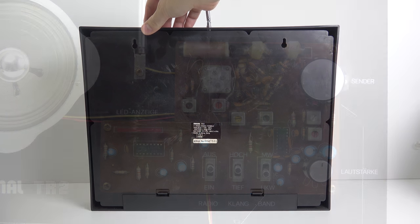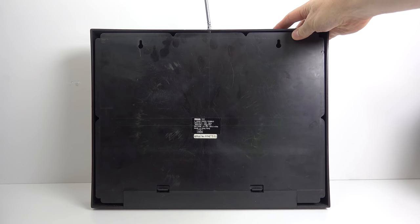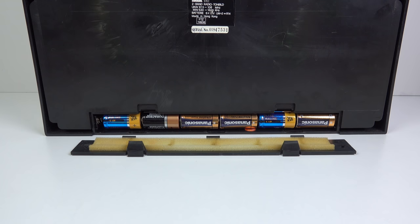On the rear of the case you've got two picture hook holes at the top to hang it up on the wall. At the bottom is where the battery compartment is which holds six C cells.